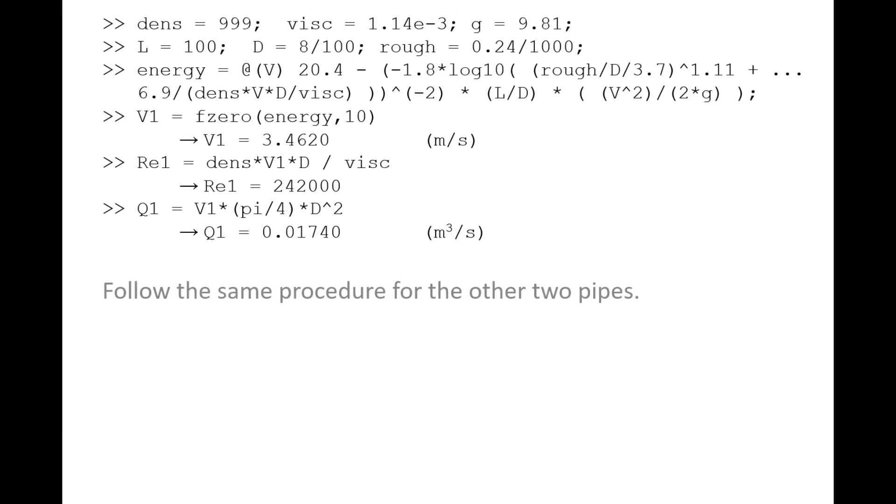If we repeat this procedure with the length, diameter, and absolute roughness of pipe 2 and pipe 3, we find that q2 is 0.007211 cubic meters per second, and q3 is 0.003173 cubic meters per second. Adding q1, q2, and q3, we find that the total volumetric flow rate is 0.0278 cubic meters per second.